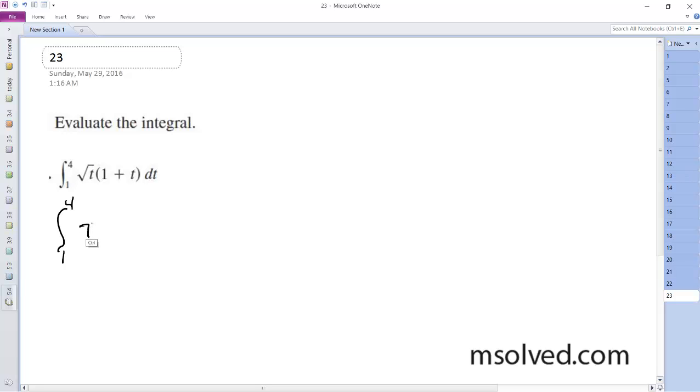square root of t, or just t raised to the 1 half, plus t raised to the 3 halves, dt. So what we end up evaluating here is equal to